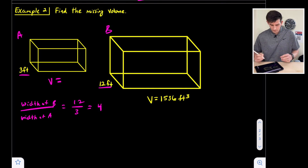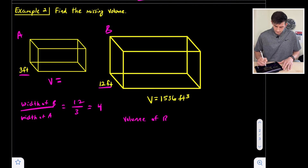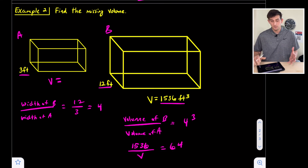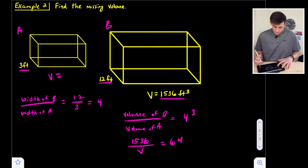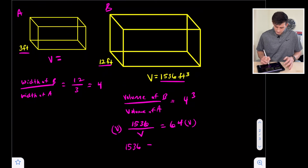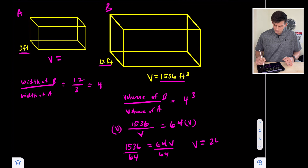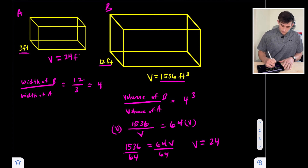Since we did width of B over width of A, we do volume of B over volume of A, set equal to 4 cubed. The volume of B is given as 1,536 feet cubed, divided by volume of A, set equal to 64 because 4 cubed is 64. Multiplying both sides by V gives us 1,536 equals 64V. Dividing both sides by 64: 1,536 divided by 64 is 24. So the missing volume is 24 cubic feet.